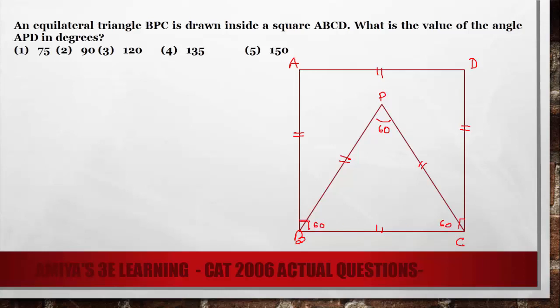Since this angle is 60, this one is 90 degrees, we can easily say this angle is nothing but 30. We need to find the angle A, P, D.